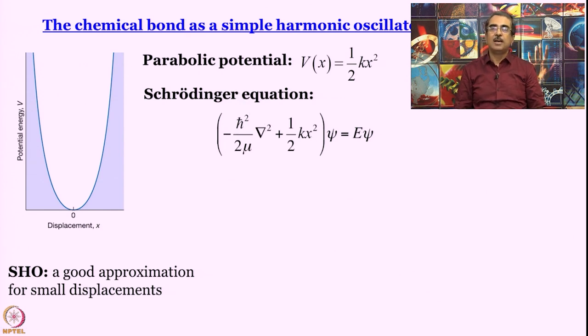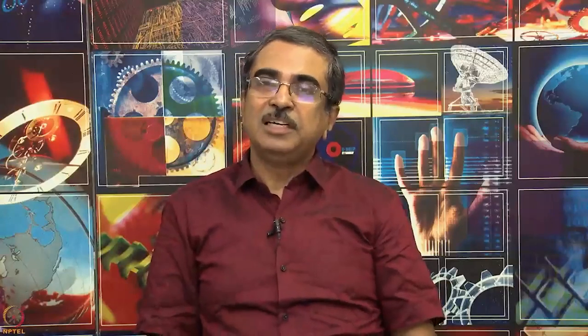The boundary condition that we have to use here - remember it is boundary condition that produces your quantization - so the boundary condition that we have to use here is ψ = 0 at x = ±∞. Not at this surface, right? Not at this surface. What is the surface we have just plotted? This parabolic potential. For this value of x, what is the value of V? There is no reason to think that at this point the wave function will become zero.